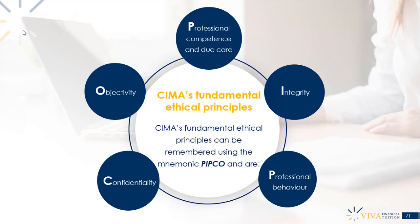Finally, objectivity: the idea is to ensure that your personal biases, prejudices, and preferences do not get in the way of decisions. You are always thinking of your obligations towards the organization as a whole and towards its key stakeholders — those things come first. As a CIMA professional, your personal preferences and biases are subordinated and must be set aside. Those are the five key principles of CIMA's code of ethics: professional competence and due care, integrity, professional behavior, confidentiality, and objectivity.